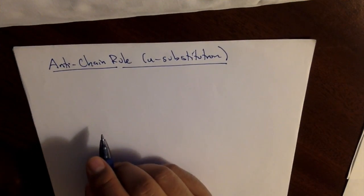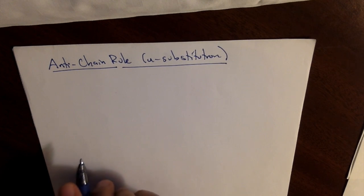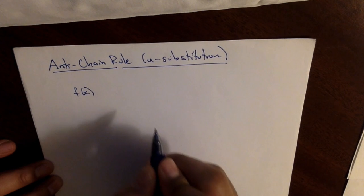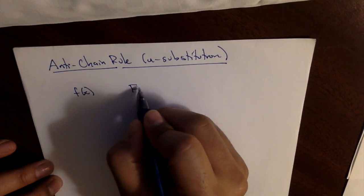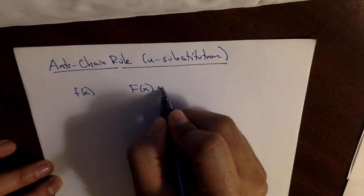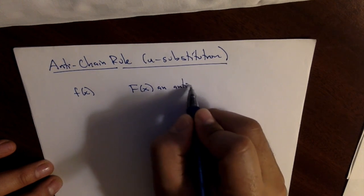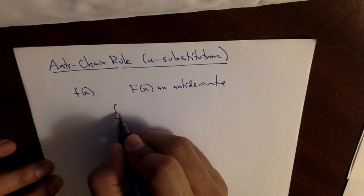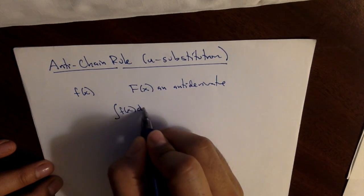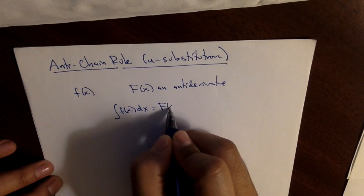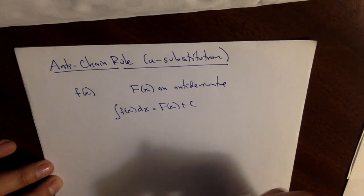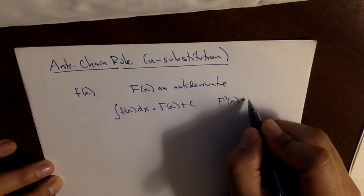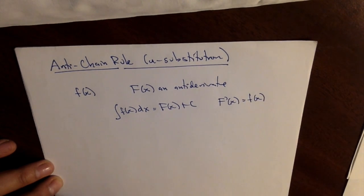Let's take a look at the anti-chain rule, otherwise known as u-substitution. So let's begin with some function, little f of x, and let's suppose that capital F of x is an anti-derivative. So that is to say, the anti-derivative of little f of x dx is capital F of x plus c, or in other words, capital F prime of x is little f of x.